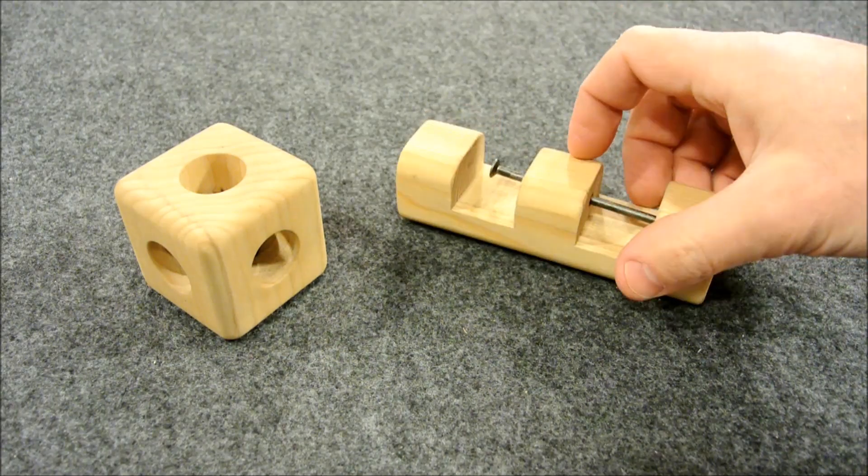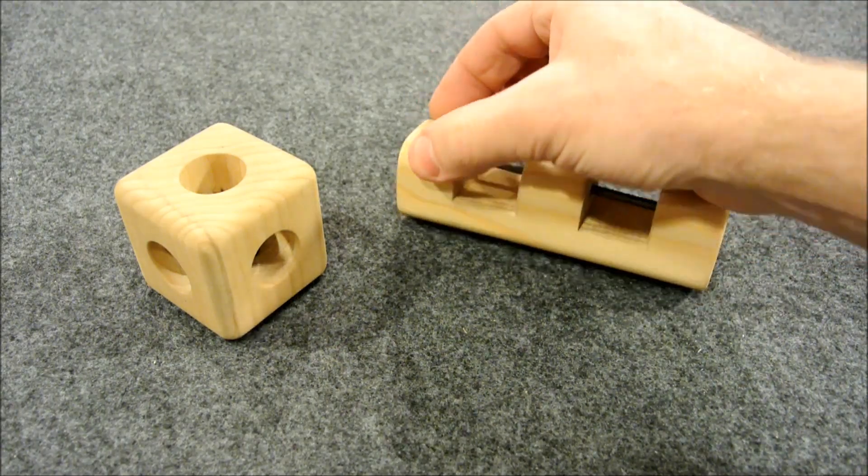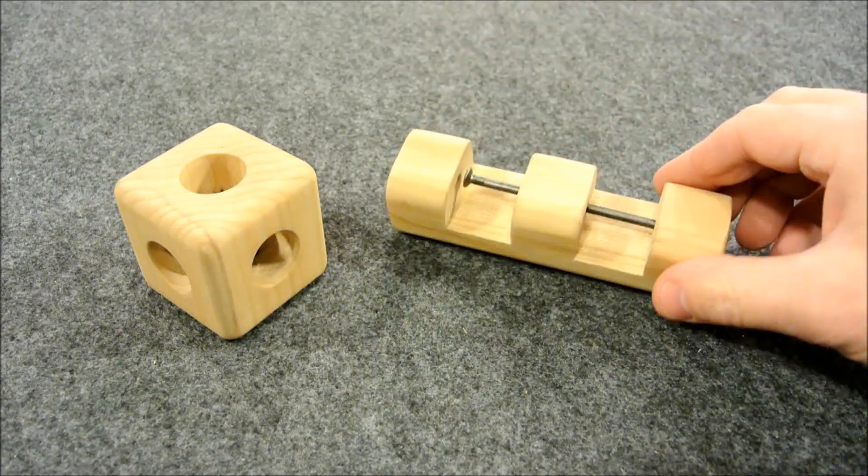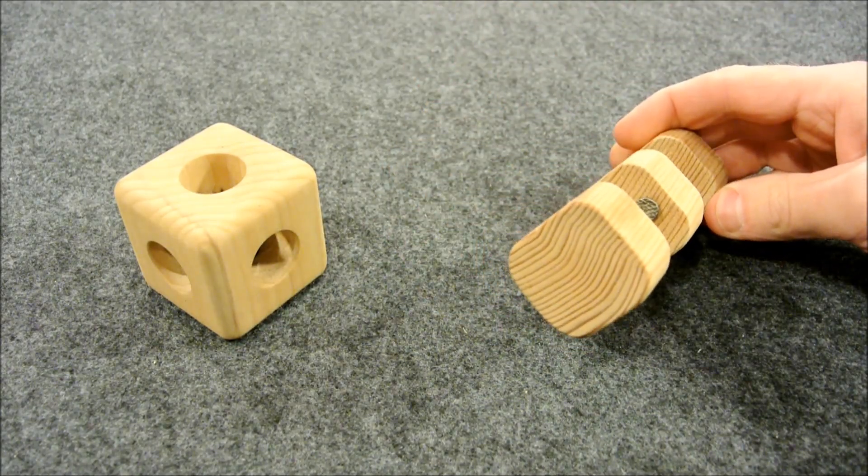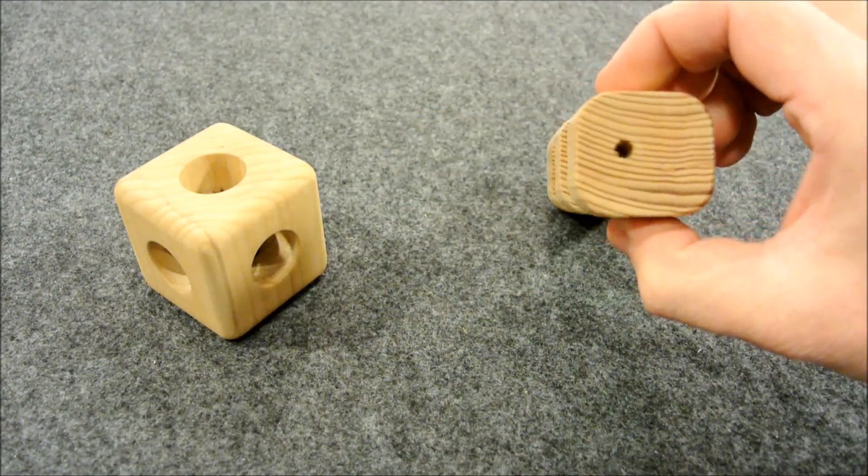Then you soak it again, or boil it again, and it allows the wood to swell back up, and you can fix it up a little bit with some sanding, and then there is very little evidence that you ever tampered with it.